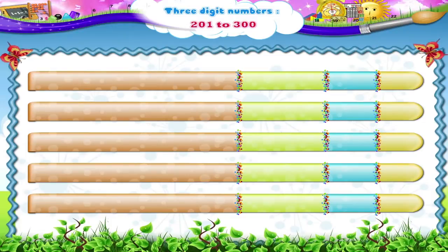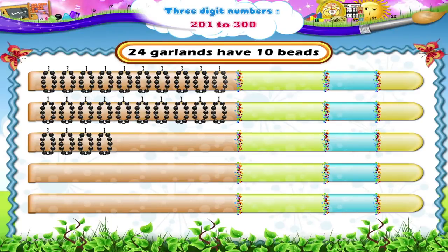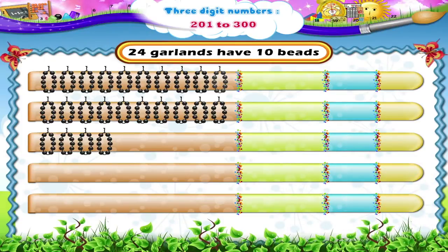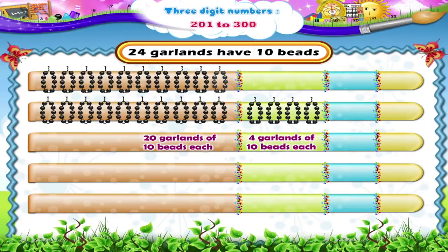Look at these garlands of beads. Each garland has 10 beads. There are 24 such garlands. Let us group these garlands with 10 garlands in each group. How many groups are formed, Starry? Yes, 2 groups. 4 garlands are left. So we get 20 garlands of 10 beads each and 4 garlands with 10 beads each remaining. 20 tens and 4 tens.